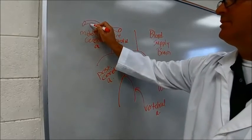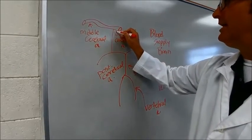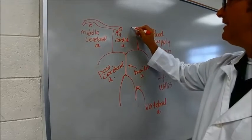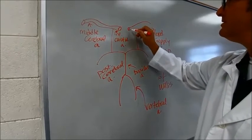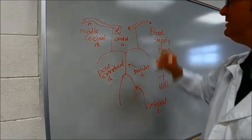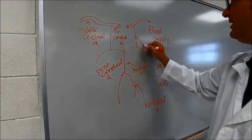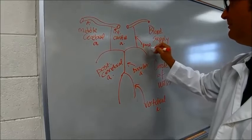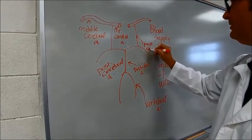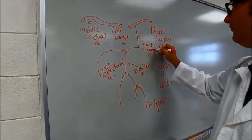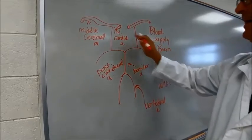That's the middle cerebral artery. This is the internal carotid, so we have that on both sides. Let's make that nicely. This is called the posterior communicating artery.